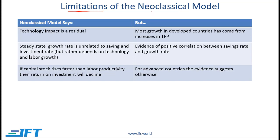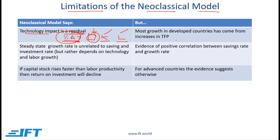Now let's look at some limitations of the neoclassical model. According to the neoclassical model, the technology impact is a residual. This means that when we look at the percentage change in output, we account for the impact of capital and labour, and whatever can't be explained is attributed to technology. If we look at the growth of developed countries over the last several decades, most of the growth has been attributed to total factor productivity — technology. So we have a model which basically does not really deal with a factor that is the primary contributor to growth. That means something is missing in the neoclassical model.